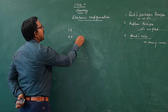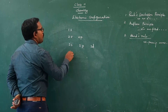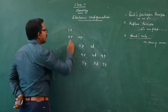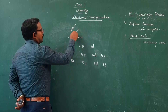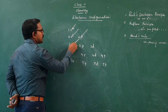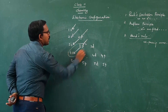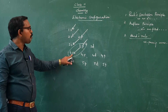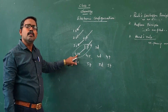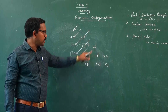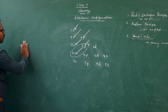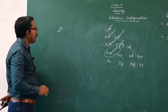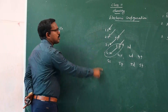The order is: 1s, 2s, 2p, 3s, 3p, 4s, 3d, 4p, 4d, 4f, 5s, 5p, 5d, 5f. First electron fills 1s, then 2s, then 2p, then 3s, then 3p, then 4s — this is very important — then 3d. For example, zinc has atomic number 30. To write its complete electronic configuration based on the Aufbau principle, you must know how many electrons each subshell can accommodate.